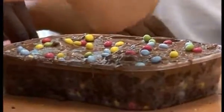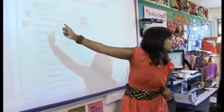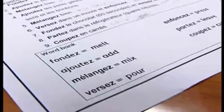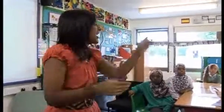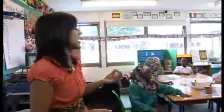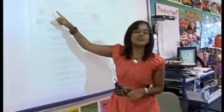My great lesson idea is to make a no-cook chocolate cake that I've actually found off the internet, and the children are going to analyse the recipe and then actually make the cake. The learning objective is for them to listen to familiar words and phrases, and to read and recognise some words and phrases in the written form.